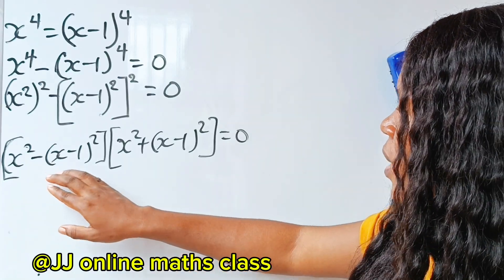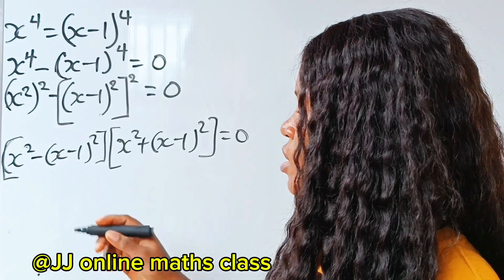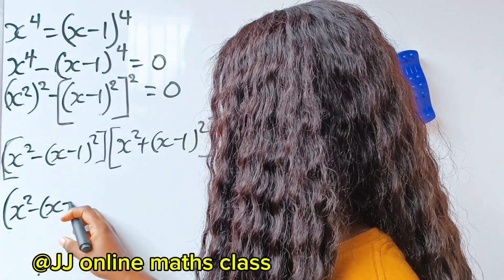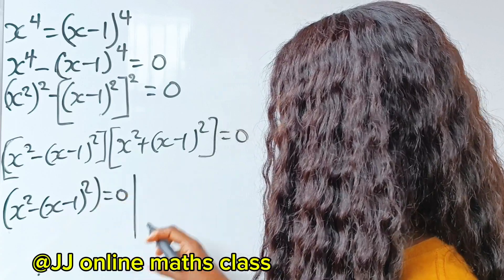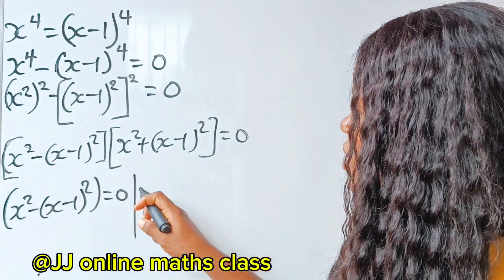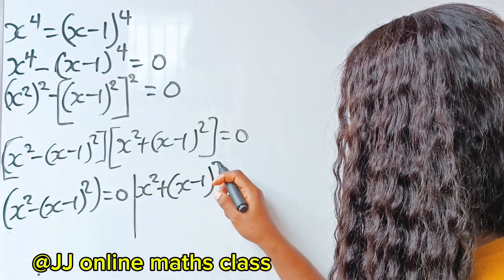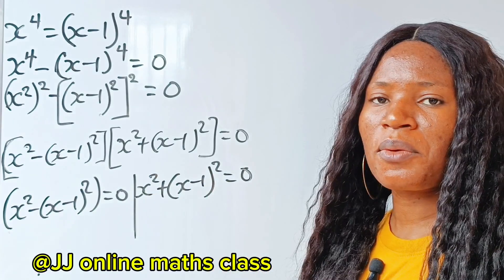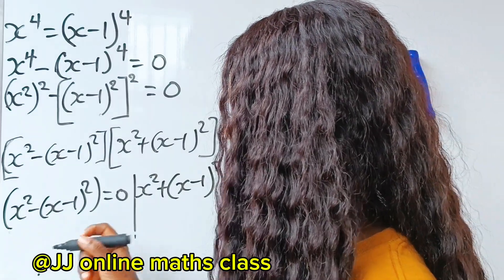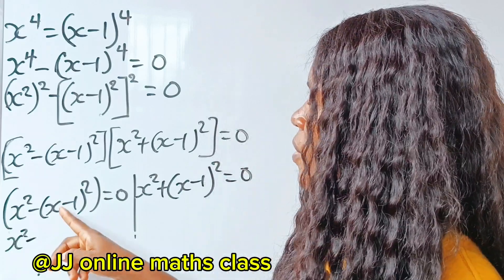At this point we have two parts of our equation. The first one is x squared minus x minus 1 squared, equal to 0. The second one is x squared plus x minus 1 squared, also equal to 0. Now we solve from the left-hand side.